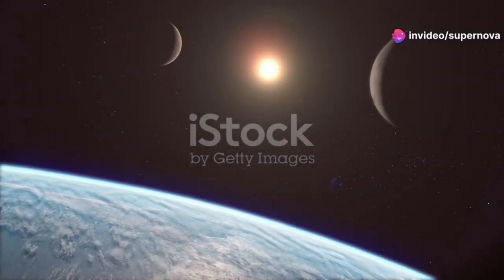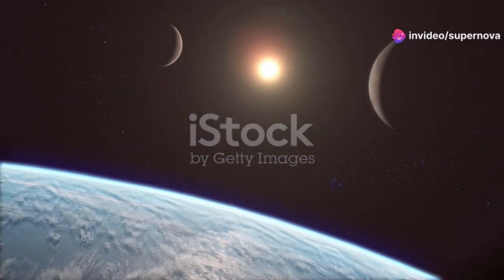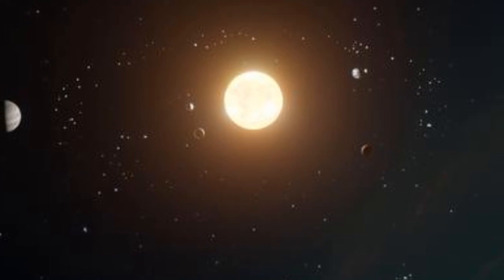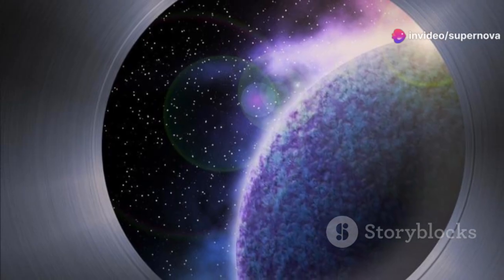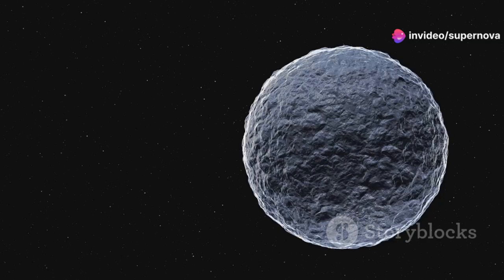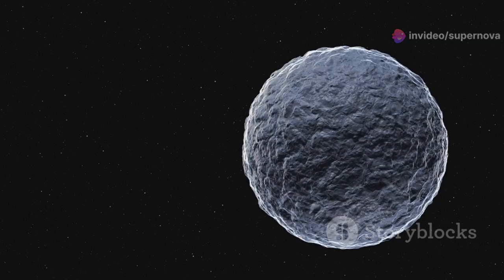The TRAPPIST-1 system, a fascinating planetary system about 40 light years away. This system is home to seven Earth-sized planets. Three of these planets are in the habitable zone. They could potentially support liquid water and life.